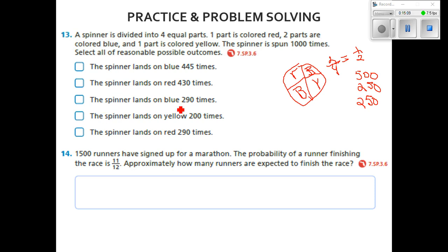The third one says the spinner lands on blue 290 times. That's not very likely either, since about half of the time is about 500. Next one says the spinner lands on yellow 200. Well, 200 is pretty close to 250, so I'm going to say yeah, it could probably land there.